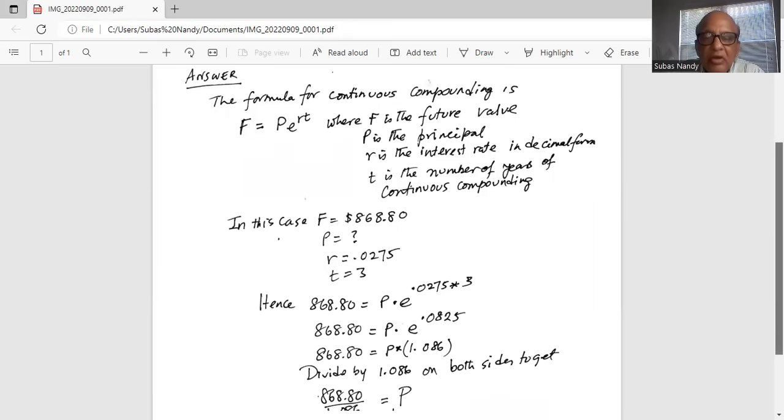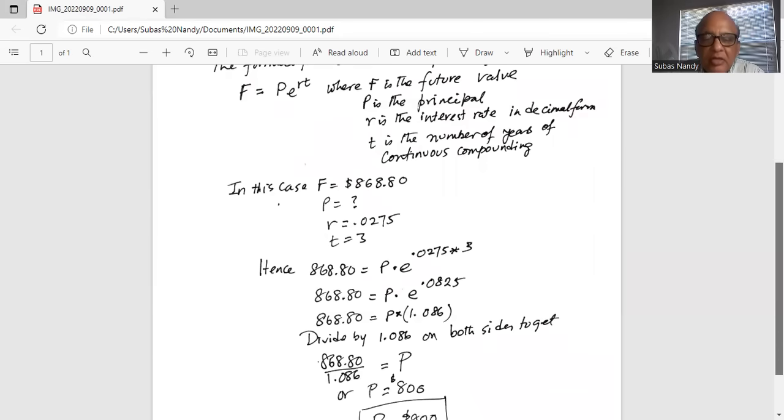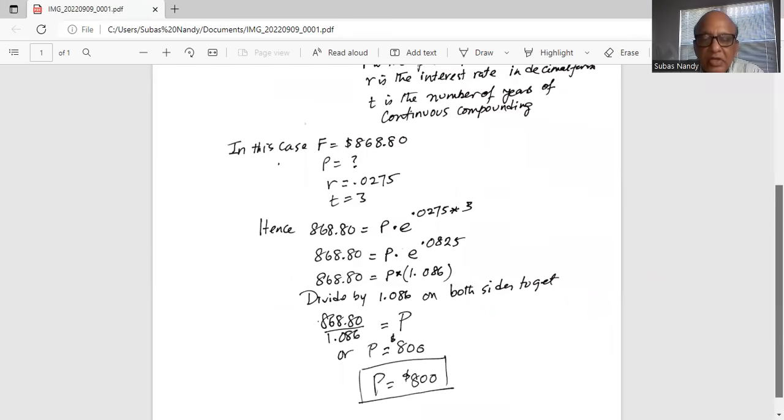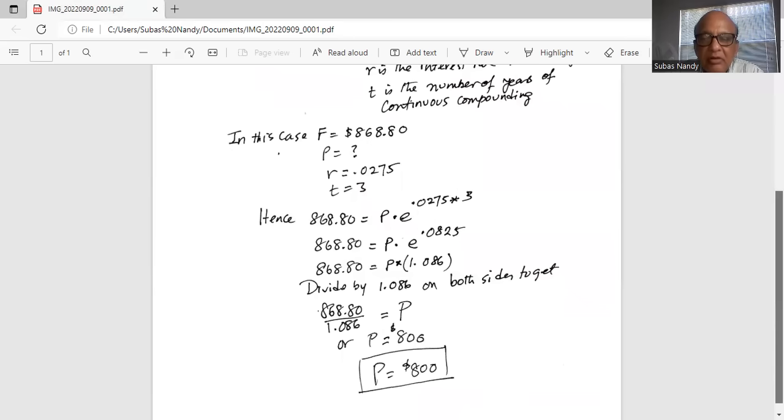Now we divide by 1.086 on both sides to get P equals 868.80 divided by 1.086, or P equals $800. So the principal amount invested initially is $800.